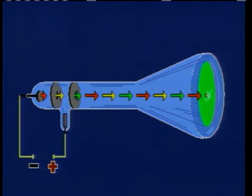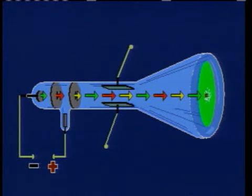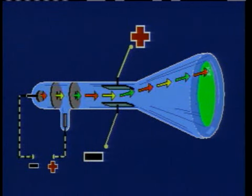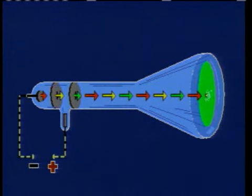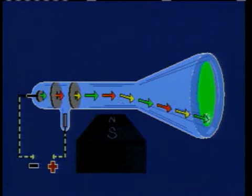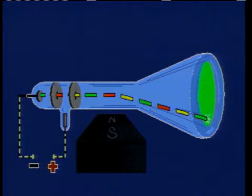Other experiments showed that electric fields would deflect cathode rays. The experiments also revealed that a magnetic field would also deflect the rays. These observations suggested that cathode rays were negatively charged particles.